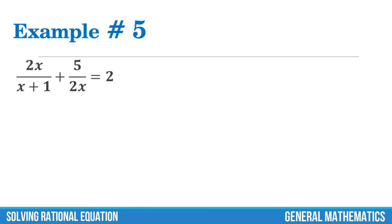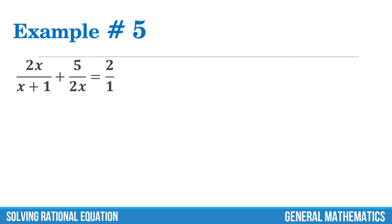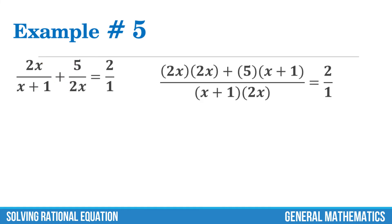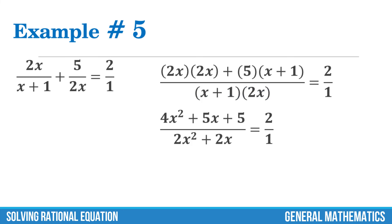Example number 5. 2x over x plus 1 plus 5 over 2x equals 2. First, add 2x over x plus 1 and 5 over 2x. Multiply the denominators: x plus 1 times 2x. Then do the cross multiplication, so we have 2x times 2x and 5 times x plus 1. 2x times 2x is 4x squared. 5 times x plus 1 is 5x plus 5, and x plus 1 times 2x is 2x squared plus 2x.